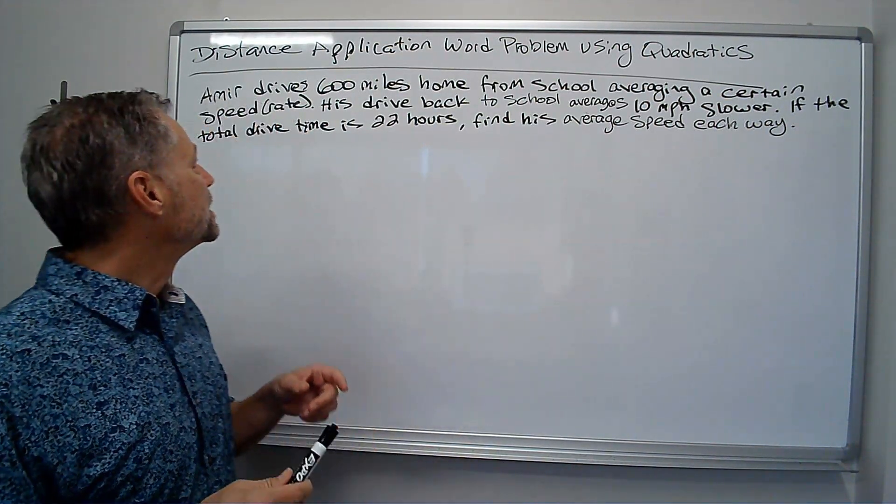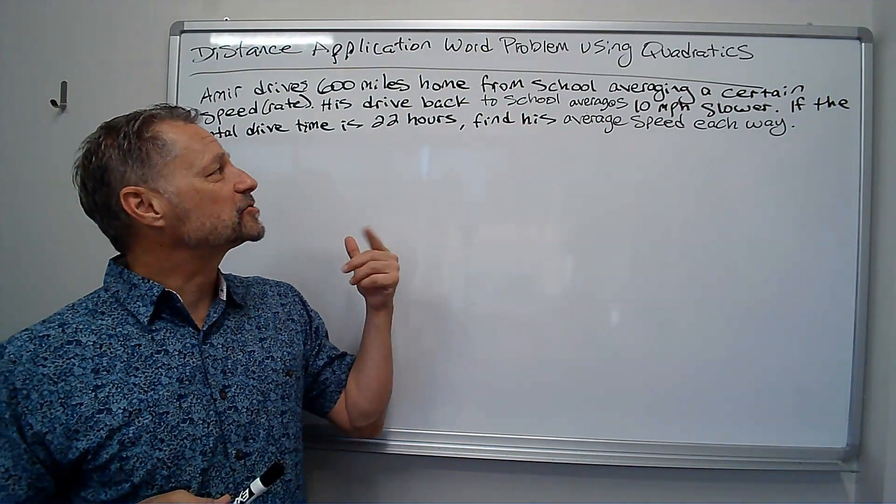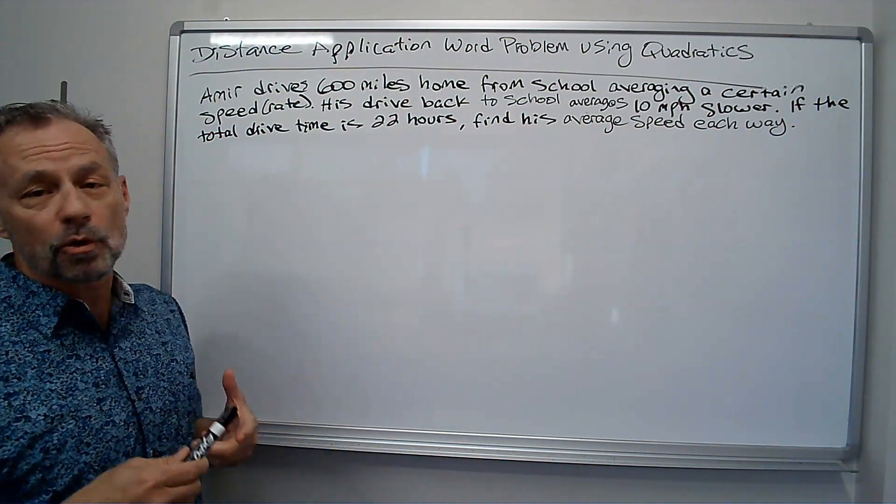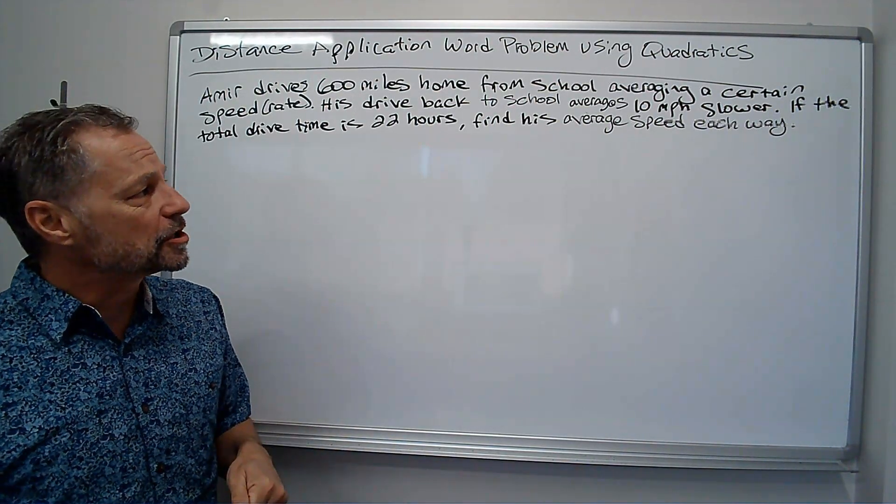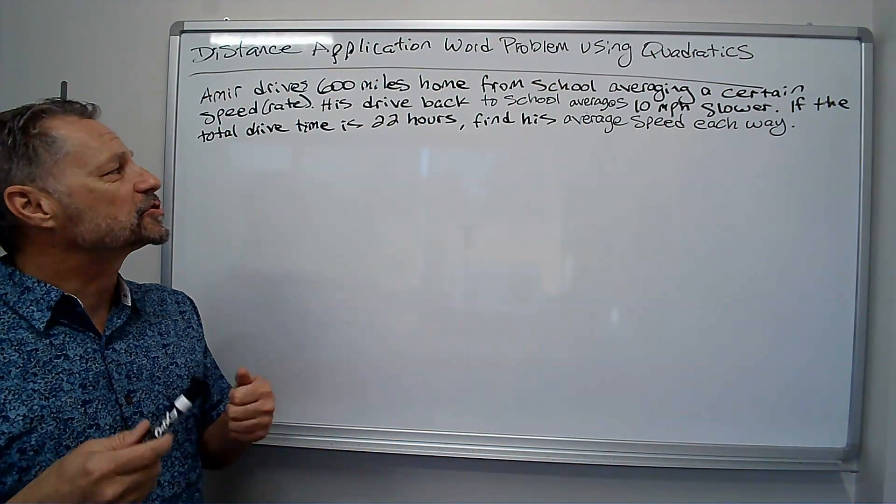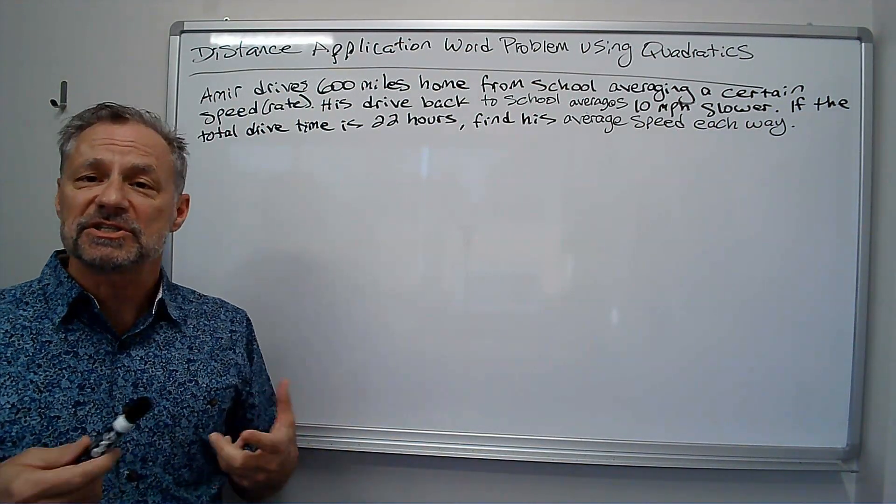Let's take a look at this problem. It says Amir drives 600 miles home from school, averaging a certain speed or rate. His drive back to school averages 10 miles per hour slower. If the total drive time is 22 hours, find his average speed each way.